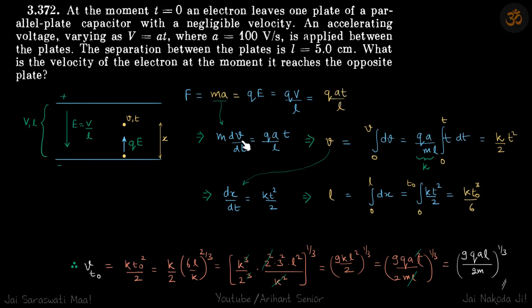From here I can find velocity by writing A as dV by dt. This velocity I can write as dx by dt.